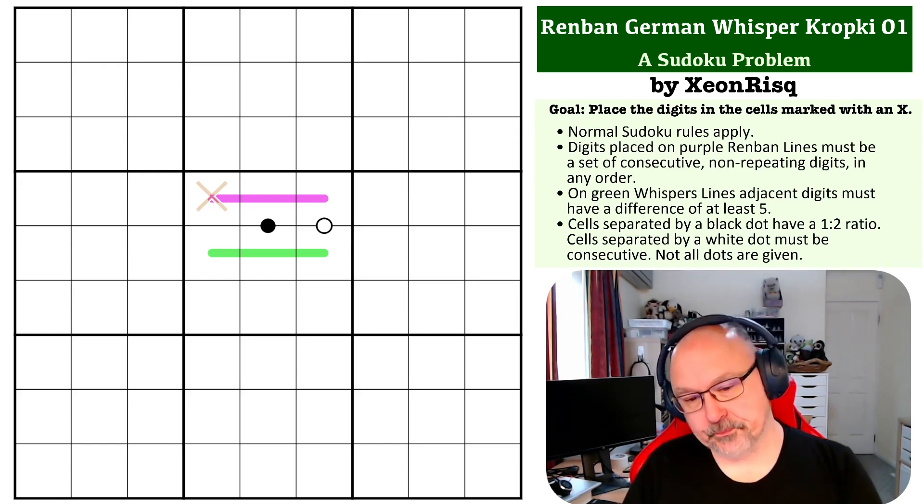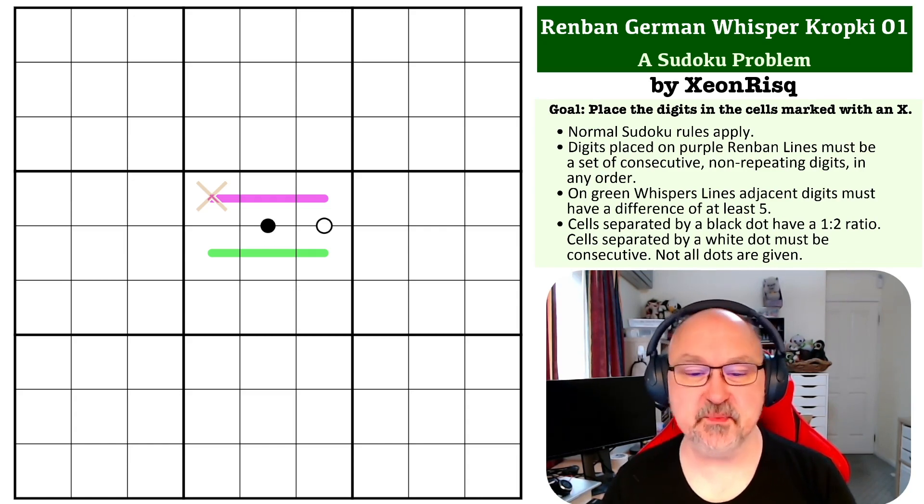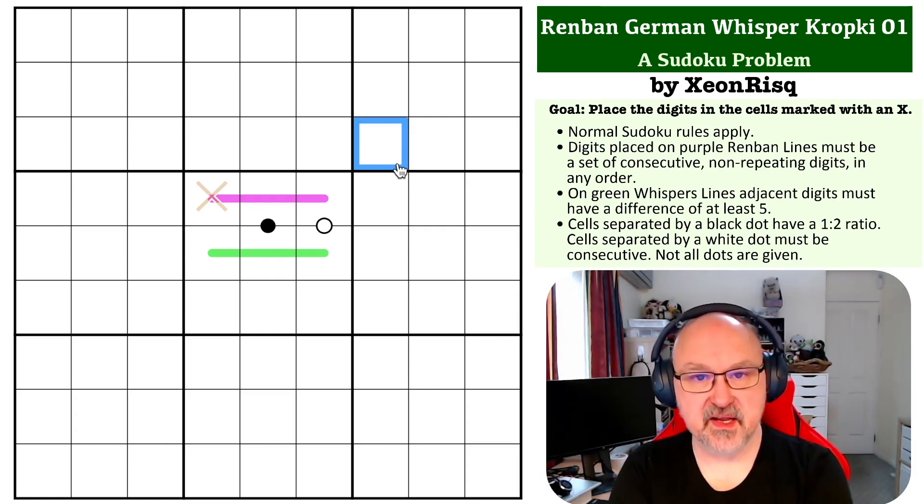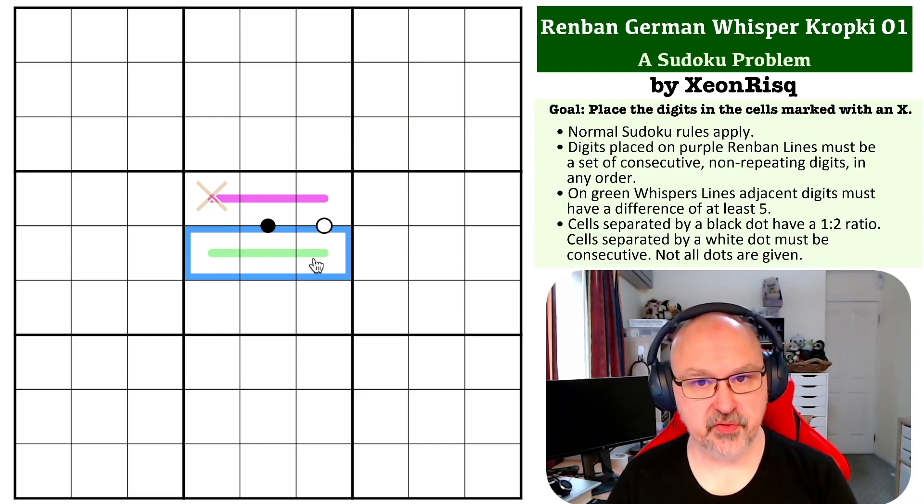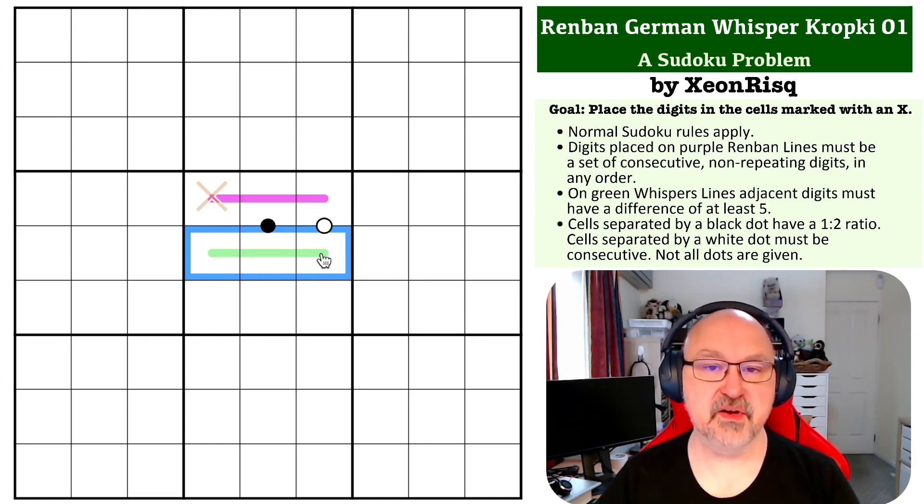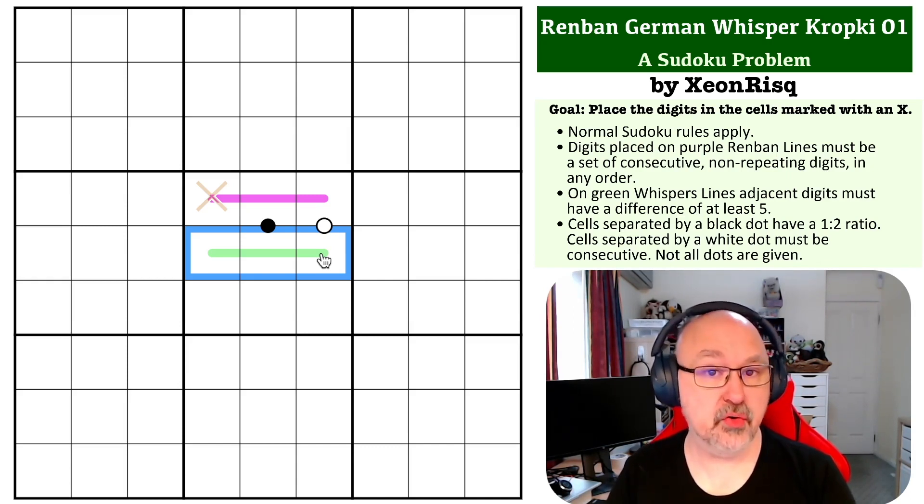Okay, so this one is a little bit tricky to explain, but we'll see how we go. The thing to think about in this one is the biggest restriction we have is on the whisper line. On a whisper line, you can never place a five, because a five on a whisper line, which must have a difference of at least five between adjacent cells, the next digit would be zero or ten, which doesn't work.